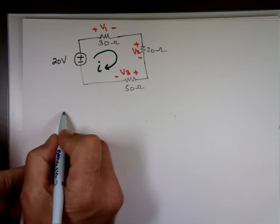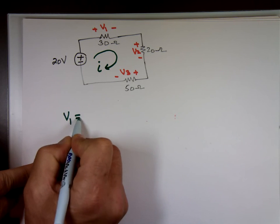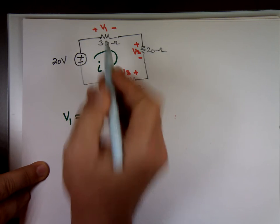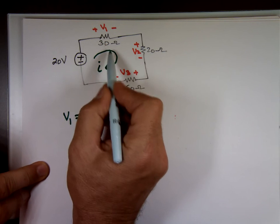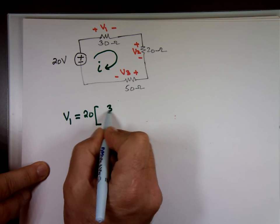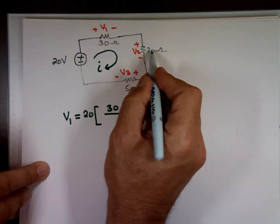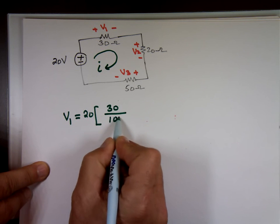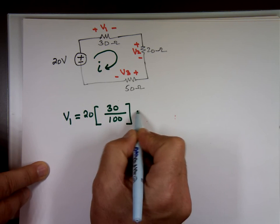So let's find what V1 is. It's going to be the source, which is 20 times that resistor. If you're looking for the voltage, you have to use that resistor. That's 30 over the sum of all three of them. 30 plus 20 plus 50, which is 100. That's 6 volts.